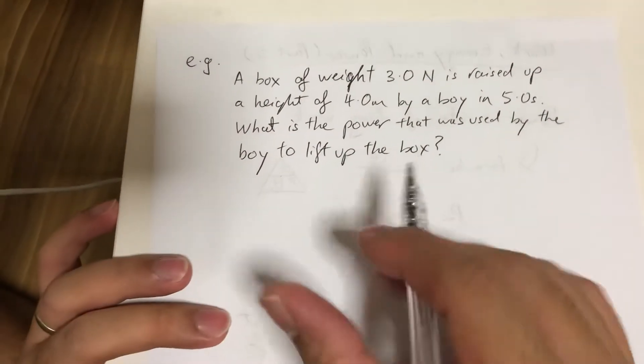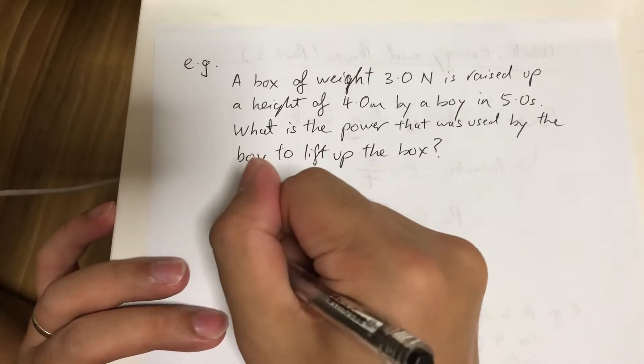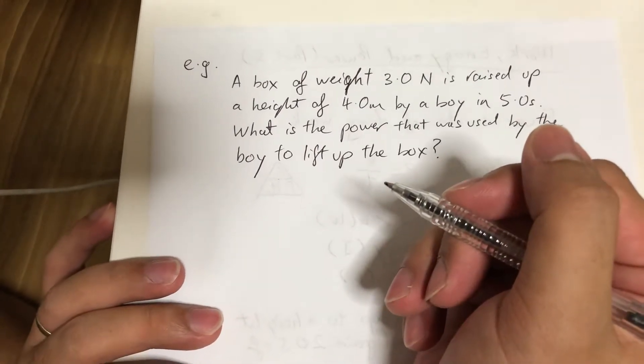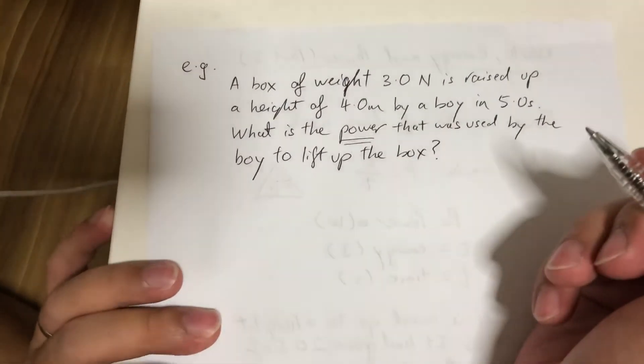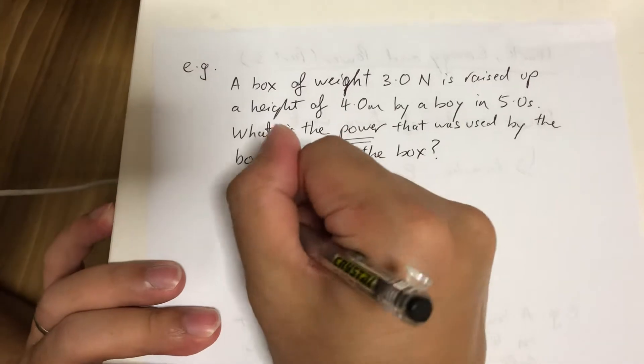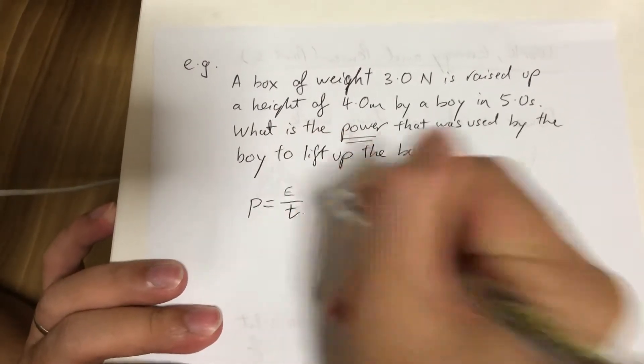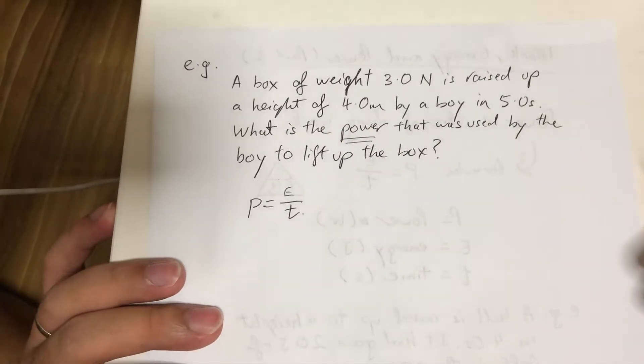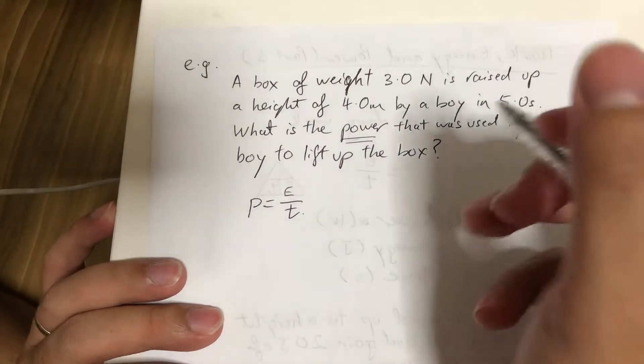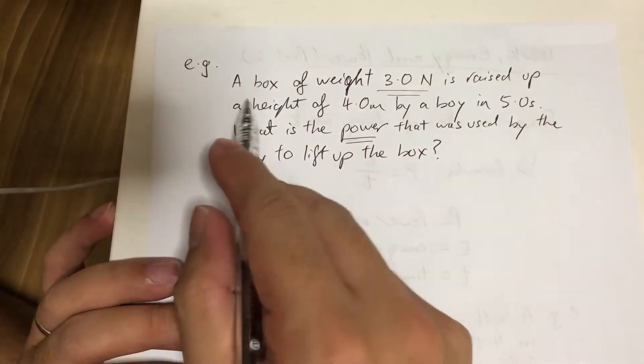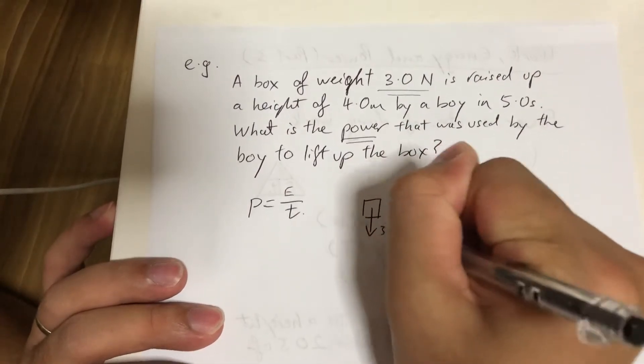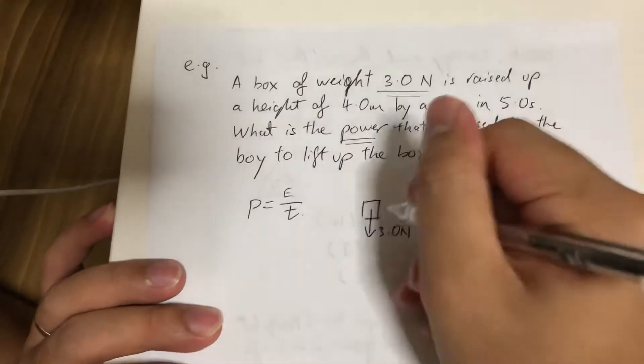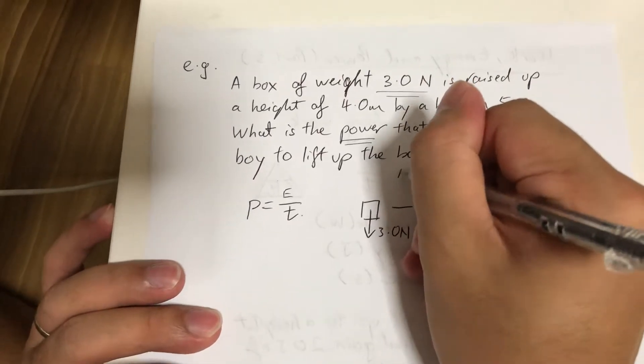So if you look at this question, you realize that this question has almost no information about energy, but they require you to find power. And we know that the formula for power is actually energy divided by time. So where do I actually get the information about energy?